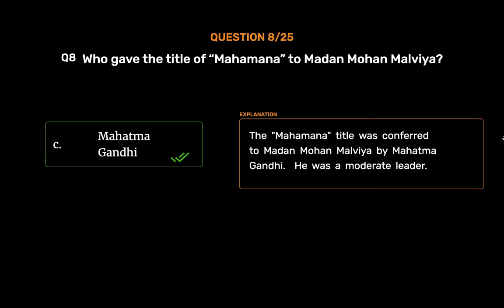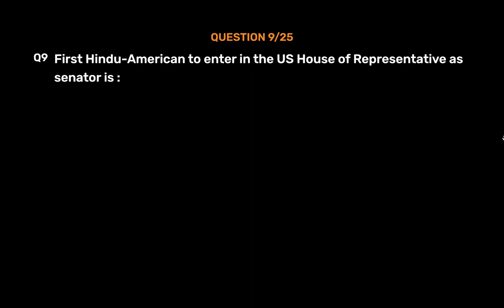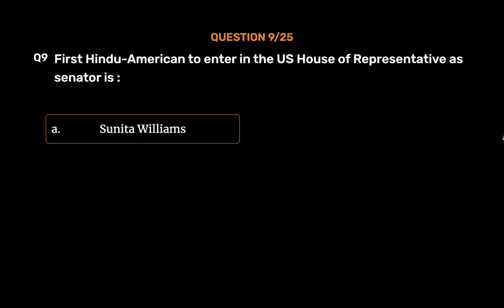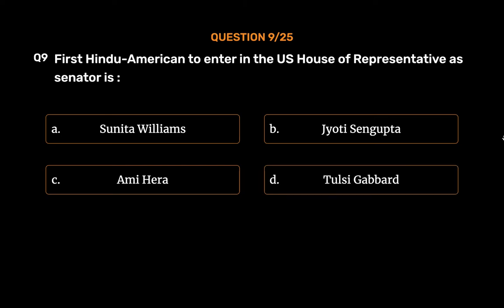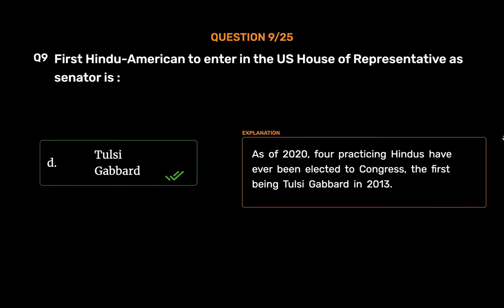Question No. 9. First Hindu American to enter in the U.S. House of Representatives as Senator is: Option A. Sunita Williams. Option B. Jyoti Sengupta. Option C. Amihera. Option D. Tulsi Gabbard. The correct answer is Option D, Tulsi Gabbard. As of 2020, four practicing Hindus have ever been elected to Congress, the first being Tulsi Gabbard in 2013.